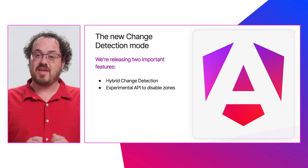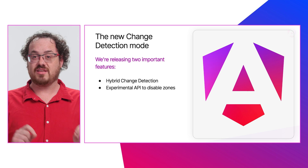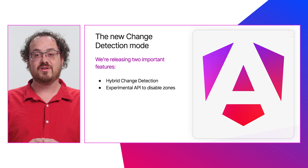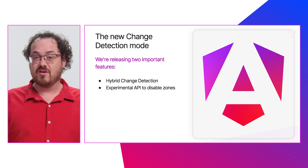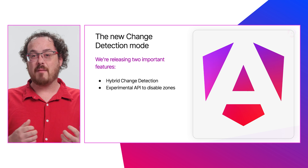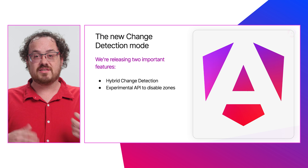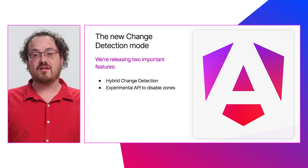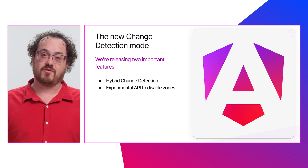Secondly, in v18, we'll have an experimental API to disable zone.js integration entirely and run applications fully in zoneless mode. This API will be experimental as not all parts of Angular work smoothly with zoneless today — we're still in the process of updating libraries like forms and material, for example. Releasing this API early will allow us to collect your feedback and gather even more data on which patterns are working with zoneless and where we might need to focus more effort.